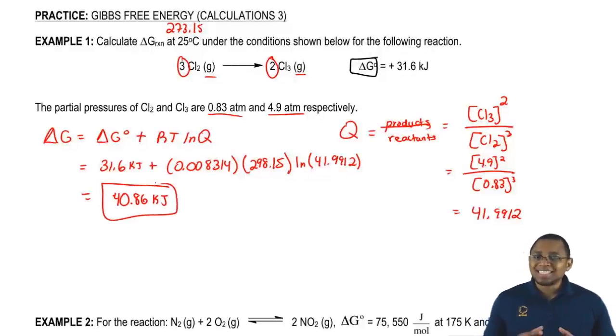What we can say about this reaction, it is highly non-spontaneous because remember, if your delta G is greater than zero, it's a non-spontaneous reaction.